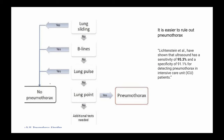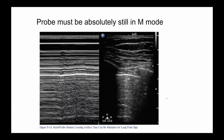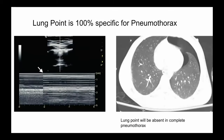Ruling in a pneumothorax requires a lung point, which is 100% specific for pneumothorax, but it's hard to find. On CT, the lung point is the location where, during inspiration, the lung expands and the visceral and parietal pleura actually meet — producing a seashore sign. On exhalation the lung returns to its original position and air reappears at that point, producing a barcode sign. In real time you see shimmering at the pleural line that stops and then moves back, with a portion of the pleural line still and a portion moving — that's the lung point, which can be detected with M-mode.